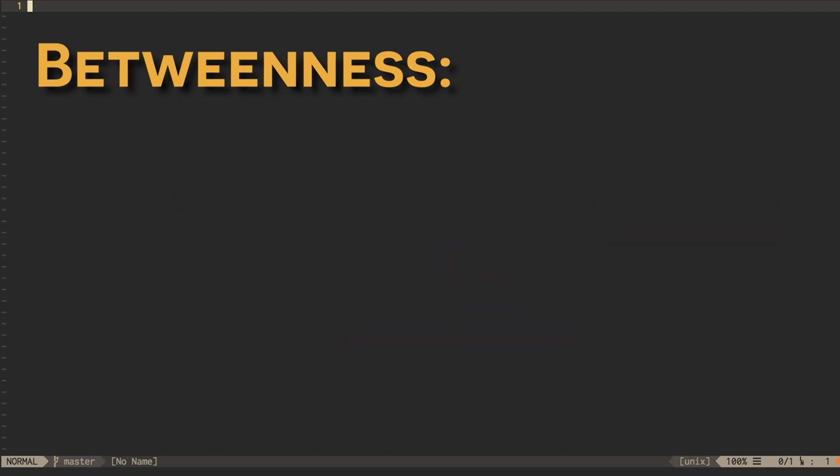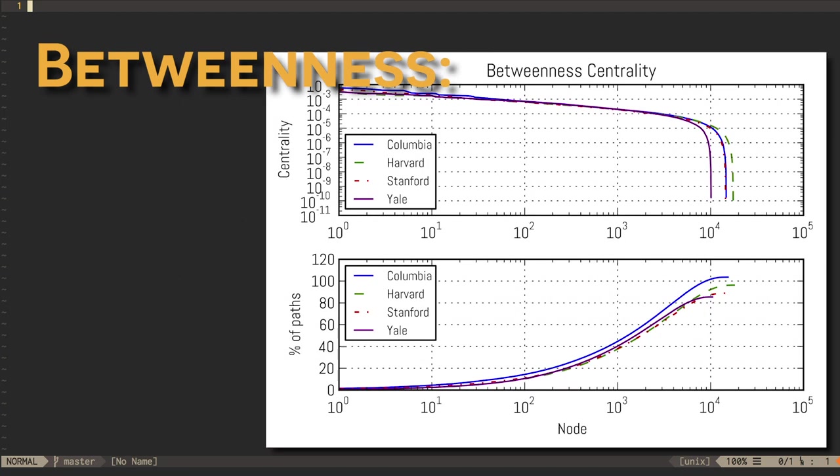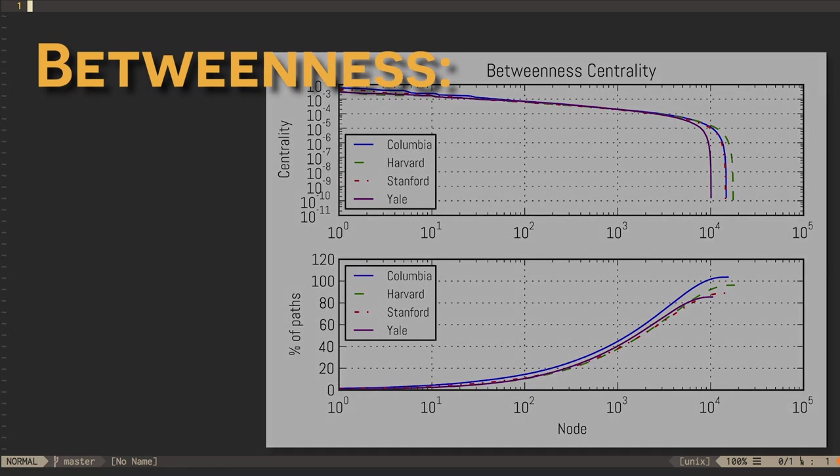If you wanted to observe the largest number of messages flowing through a network, you'd start by monitoring the vertices with the highest values of betweenness centrality.